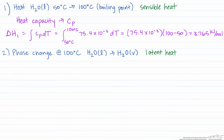Our second step is the phase change. For that, we use the heat of vaporization looked up at 100 degrees C, which equals 40.656 kilojoules per mole. We'll call this H2.